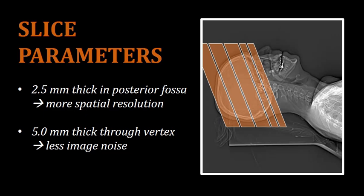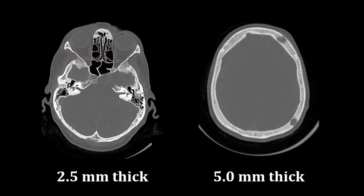Using thicker slices does decrease spatial resolution, but it also allows for less image noise. Through the base of the skull, 2.5 millimeter thick slices are preferred. When you look at the mastoid air cells and other structures of the base of the cranium, it is helpful to see increased detail even if that does increase image noise.